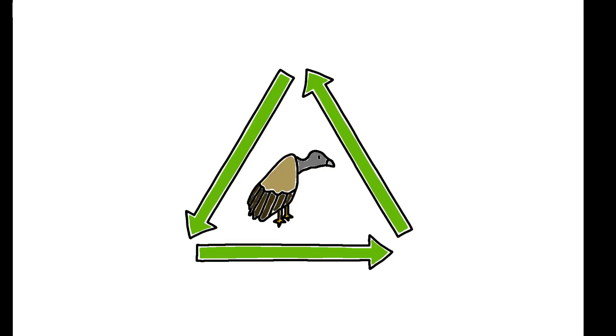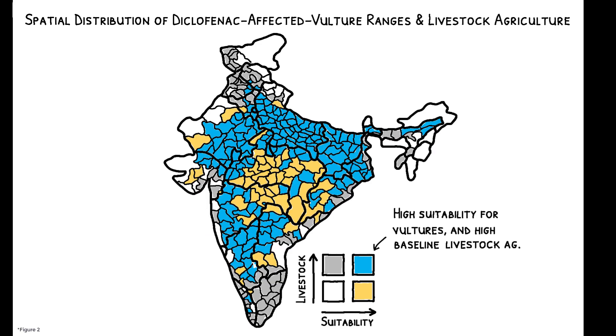Given vultures' role in environmental sanitation, did their collapse have public health consequences? To answer this, the authors classify Indian districts according to their habitat suitability for vultures. The idea is that areas with high suitability at baseline were more likely to be exposed to the rapid and dramatic fall in vulture populations.